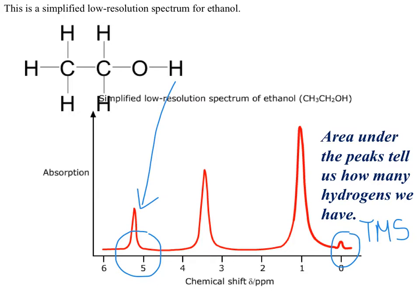To put that all together in a really good explanation: the electronegative oxygen atom has deshielded the hydrogen atom and therefore the chemical shift of the peak caused by that hydrogen has been shifted downfield. Put really simply, I'm expecting the peak caused by the hydrogen atom attached to the electronegative oxygen to have the greatest chemical shift.